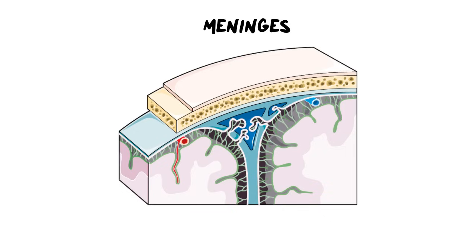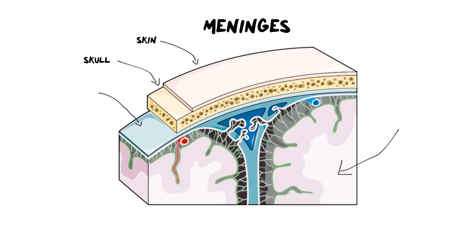Sitting around the brain and spinal cord are structures called meninges, which are protective layers. This cross-section shows a piece of brain as well as some protective layers. The outer layer represents your skin, and sitting just below that is the bone of the skull. Then there are three protective layers underneath to protect your brain and spinal cord. We start with the most outer layer — a thick, tough layer called the dura mater. It is very fibrous, almost like a sack that your brain sits in.